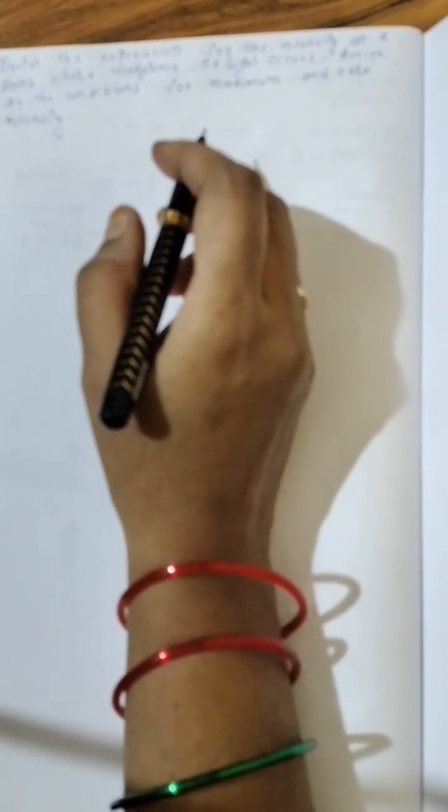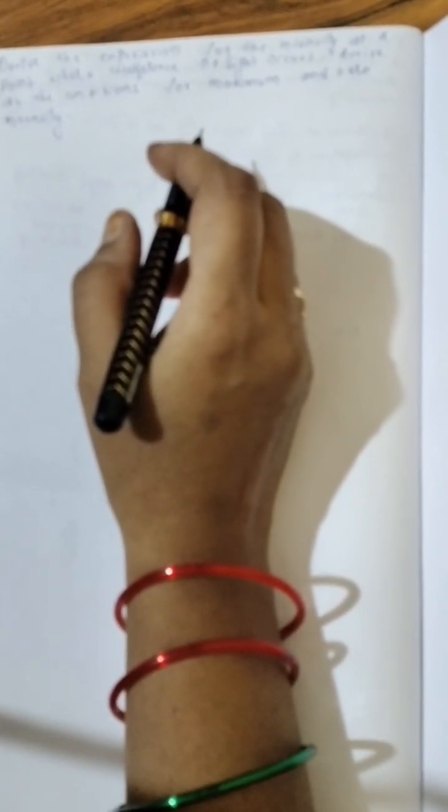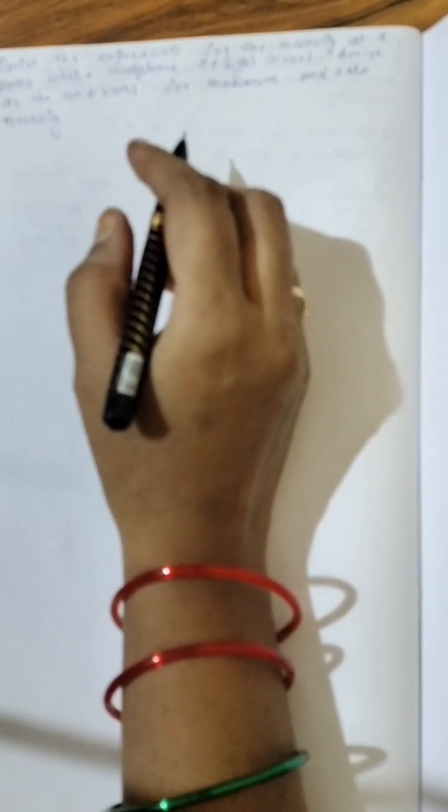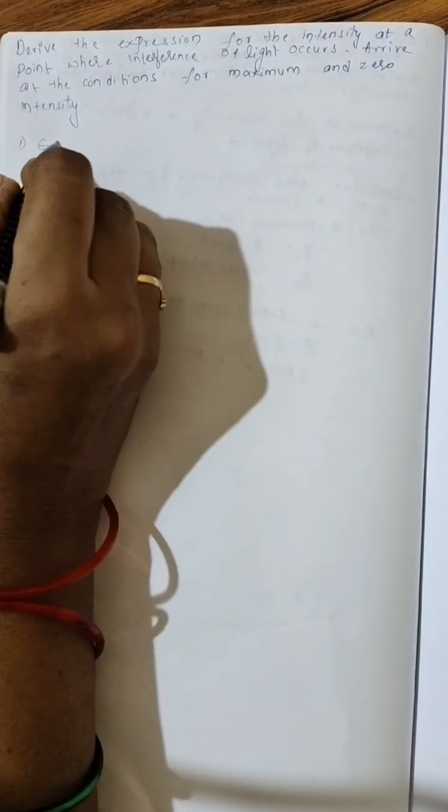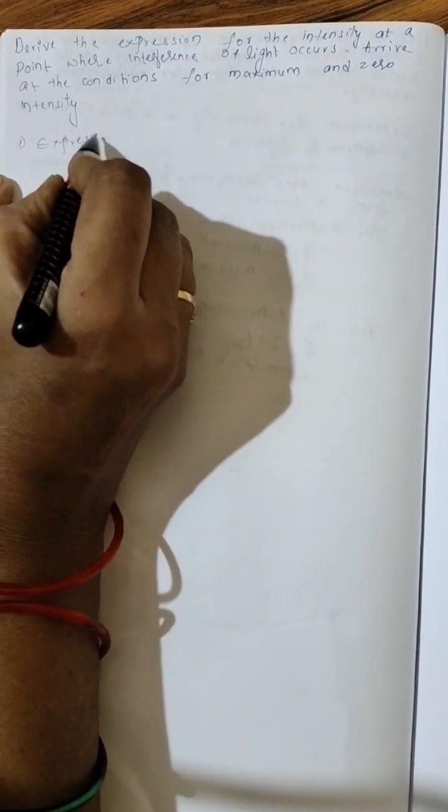In this video, let us discuss chapter 3 wave optics short answer questions. The first important question is derive the expression for intensity at a point where the interference of light occurs. Arrive at the conditions for maximum and zero intensity. So now, first let us derive the expression for intensity.